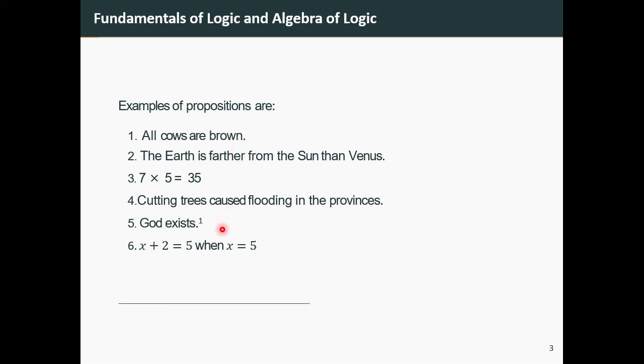Let's take a look at the last one. Notice that the last one is a proposition because x + 2 = 5 when x = 5 can be quantified as something that is either true or false. That's what makes number six a proposition.